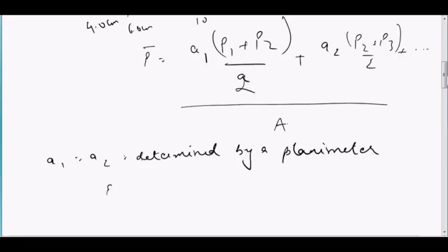And P1, P2, P3 needless to explain — these are the mean precipitation values between consecutive isohytal lines.